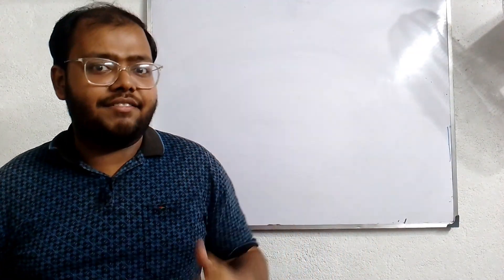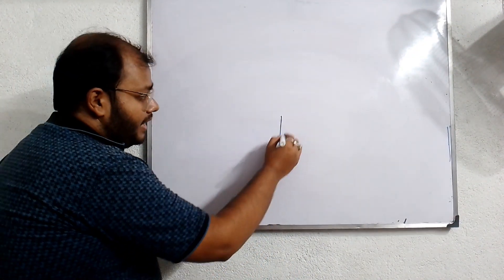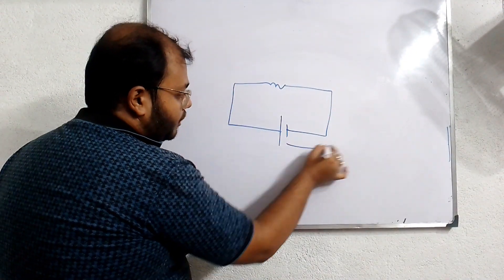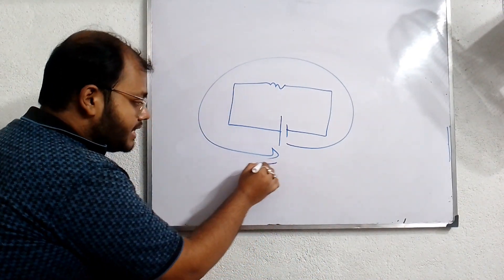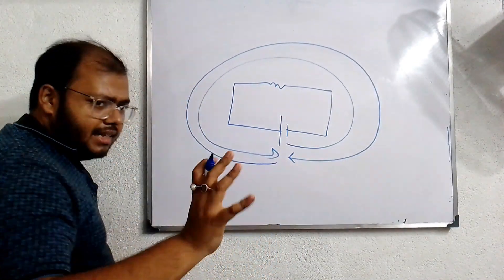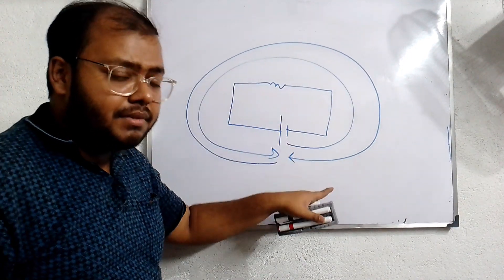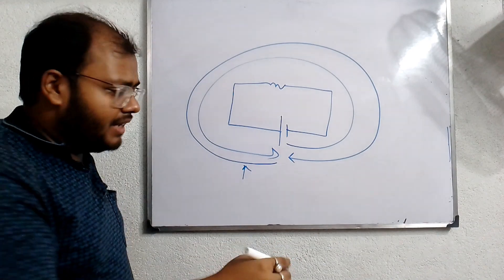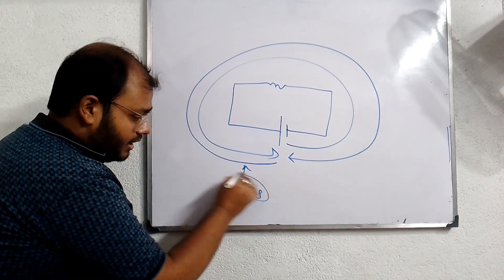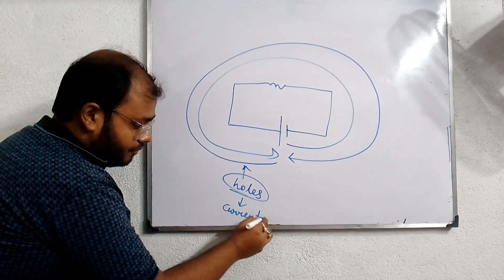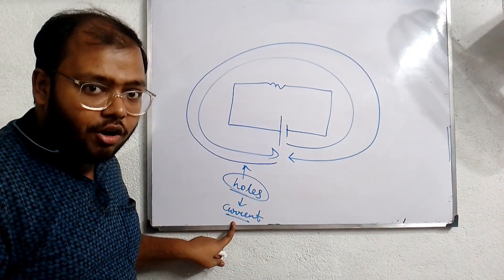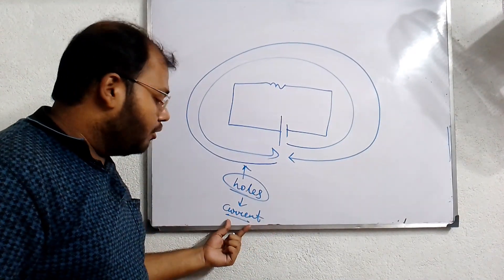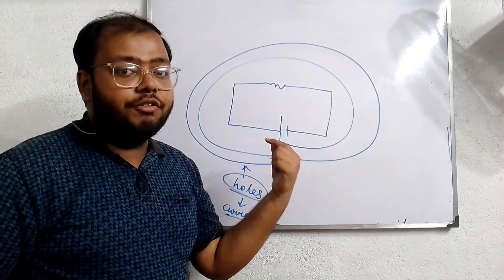So we will understand current flow after connecting the battery. When we connect the battery, the free electrons will flow from lower potential to higher potential. To maintain conservation of energy, an opposite — that means positively charged something — will have to flow from positive to negative terminals. That positive something will be called holes. The flow of holes will be called current flow; the concept of holes is just a theoretical concept. Mainly, current will flow when free electrons flow.